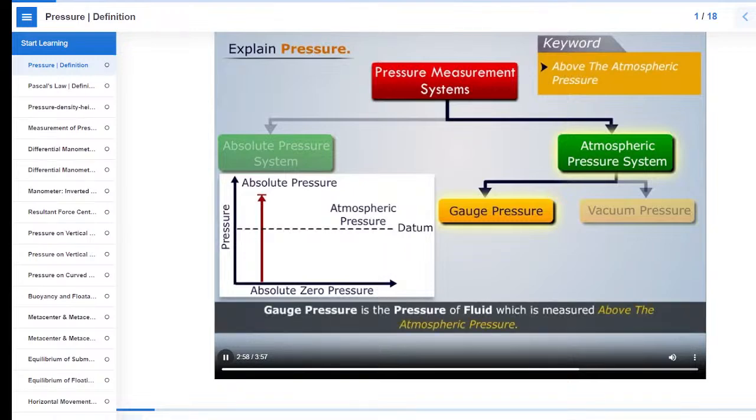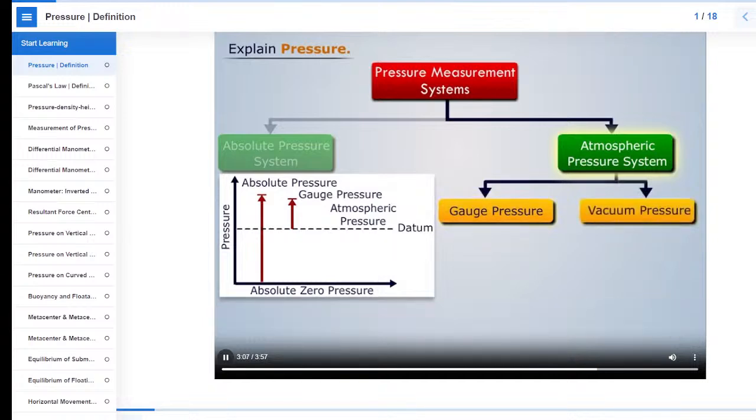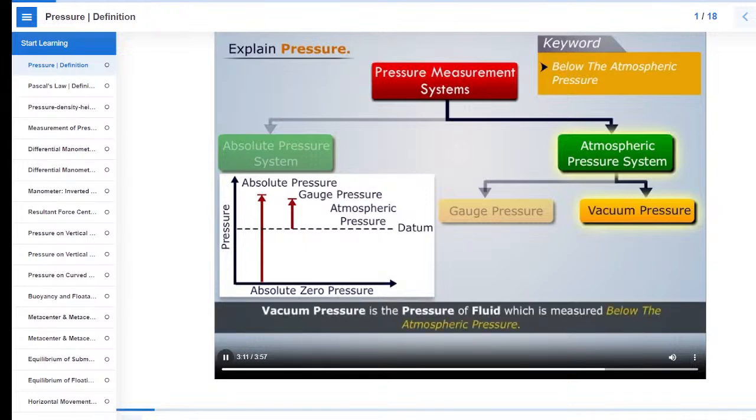Gauge pressure is the pressure of fluid which is measured above the atmospheric pressure. And vacuum pressure is the pressure of the fluid which is measured below the atmospheric pressure.